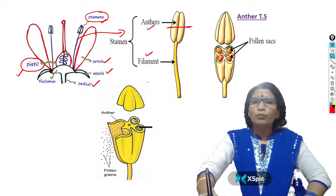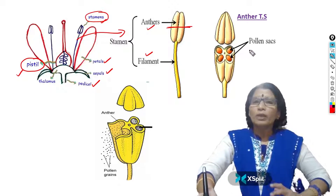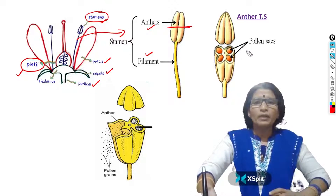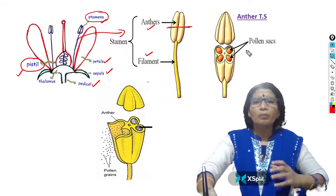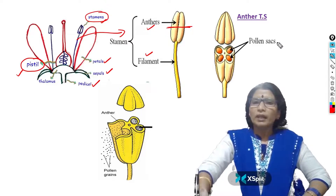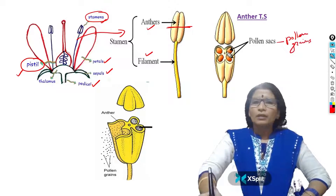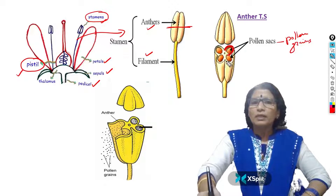Inside the anther, 4 pollen sacs are present. Each pollen sac you can call a microsporangium. Our topic is about the microsporangium wall layers. Inside the pollen sac, pollen grains are usually produced. This pollen sac — the microsporangium — is usually surrounded and protected by 4 wall layers.